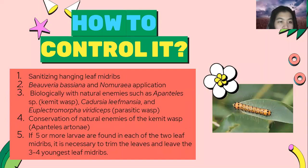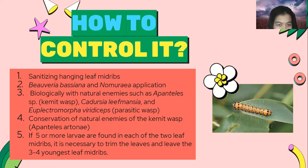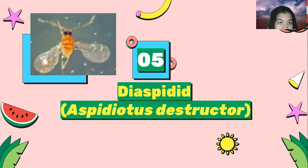How to control Artona catoxantha? The first method is sanitation of the coconut field. The second is using Beauveria bassiana with foliar application. The third is biological control with natural enemies such as Apanteles sp., Cadursia lefmansia, and Apethelomorpha viridisceps. The fourth is conservation of natural enemies including parasitic wasps. The fifth method: if five or more larvae are found in each of the two leaf midribs, it is necessary to trim the leaves and remove the three to four youngest leaf midribs.